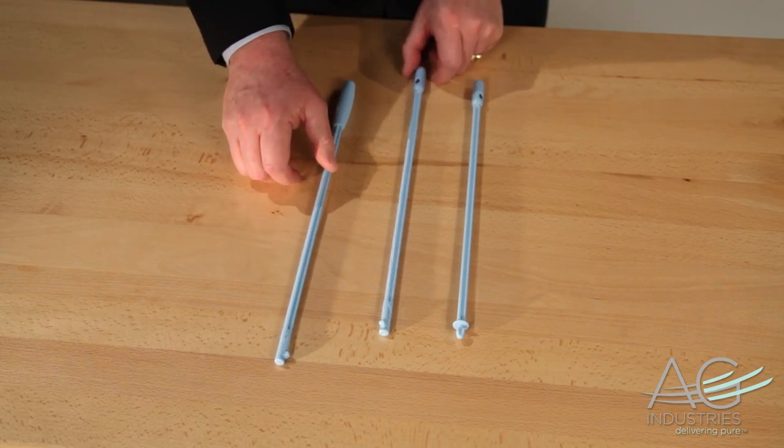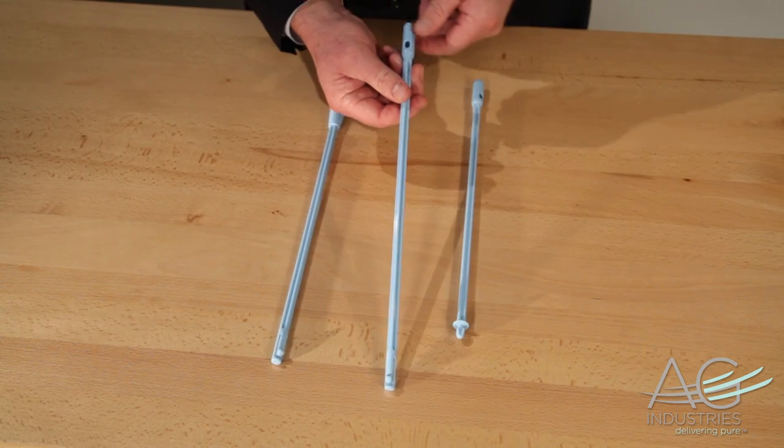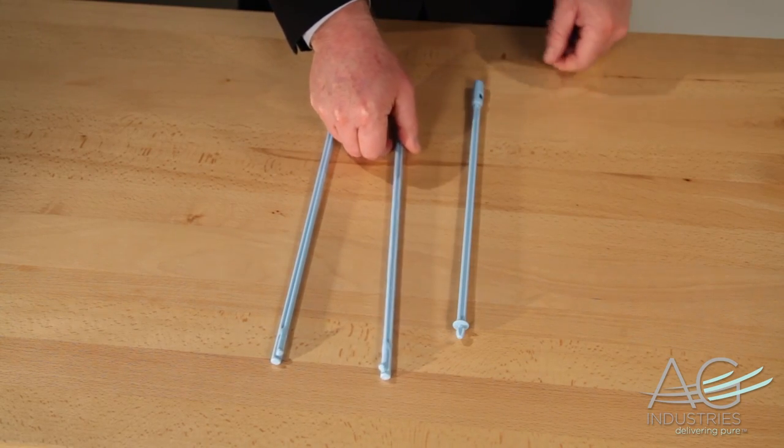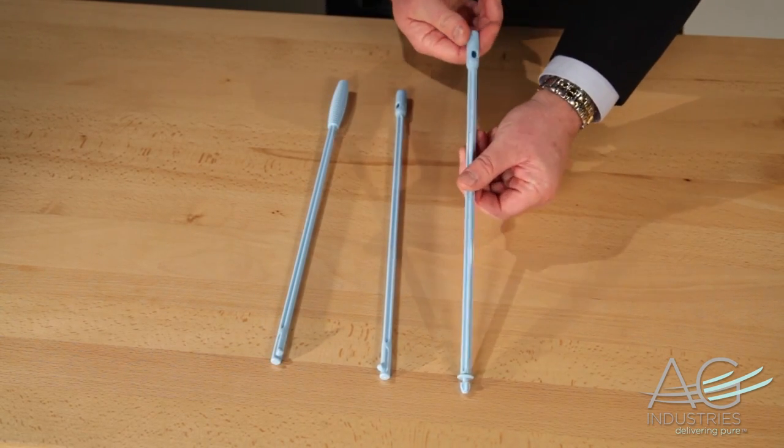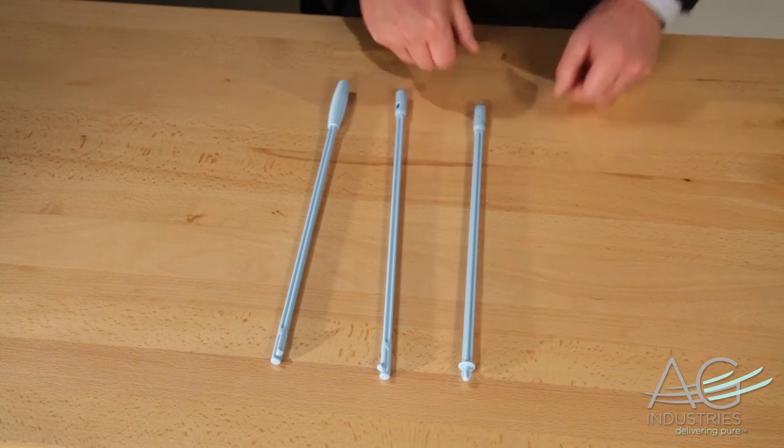Another section will have a receiving hole on one end and an attachment button on the other. This is section B. The final section will have a receiving hole on one end and a tapered pad fitting on the other. This is section C.